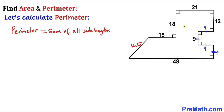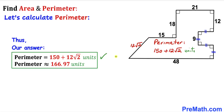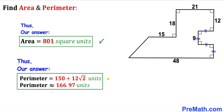For the perimeter, we sum all side lengths: 21, 18, 15, 12√2, 48, 9, 9, 9, 9, and 12. Combining like terms, the perimeter P turns out to be 150 plus 12 times the square root of 2 units, or in decimal form, approximately 166.97 units.